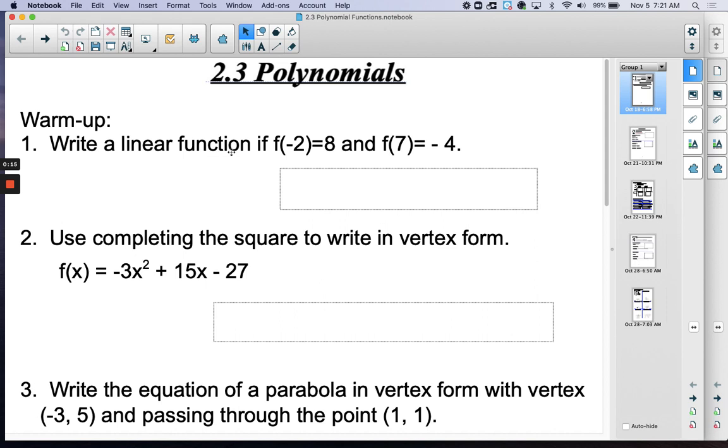So you want to write a linear function if you're given f(-2)=8 and f(7)=-4. And there were problems like this in the previous section, so if you're unsure you can revisit the video.